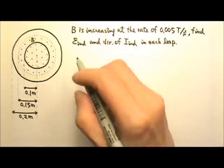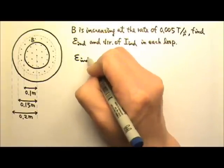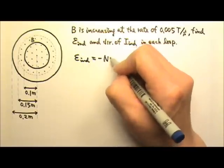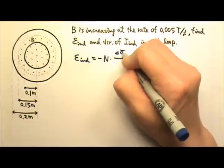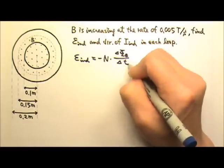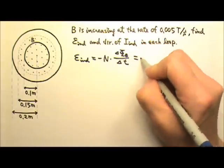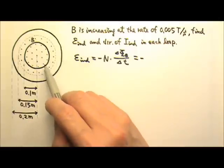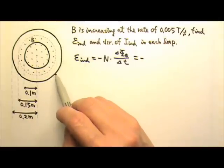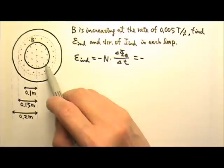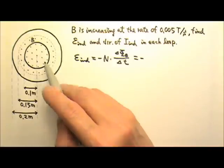Faraday's law of induction says the induced EMF is negative N times delta phi B over delta T. We have two loops, but they are two separate loops. So for each individual loop, there is only one turn, so N is 1.